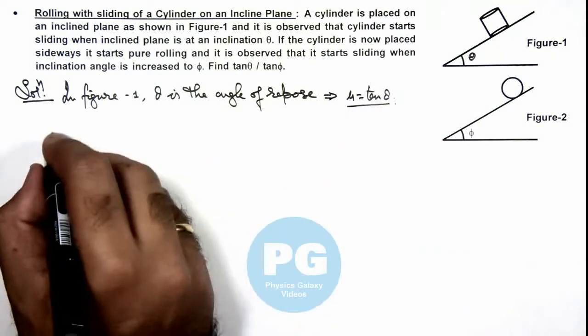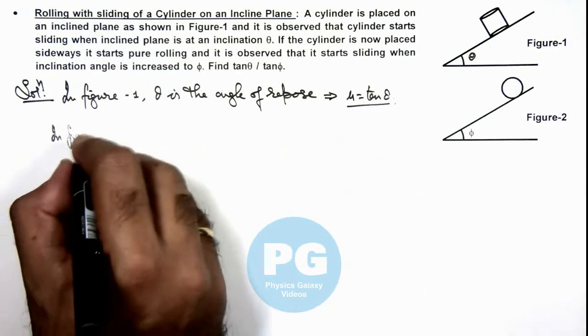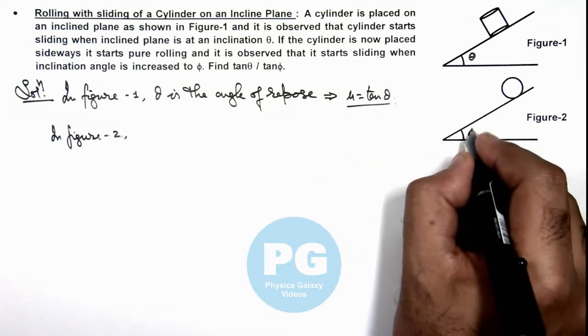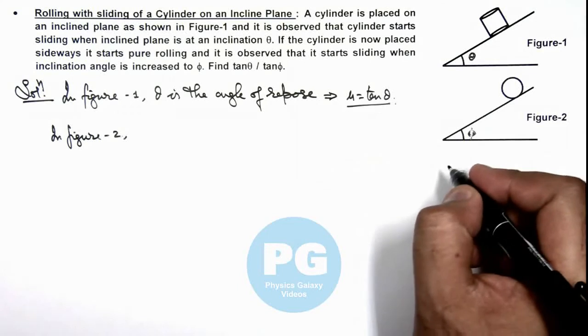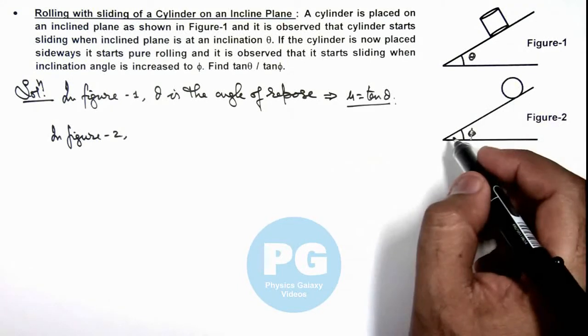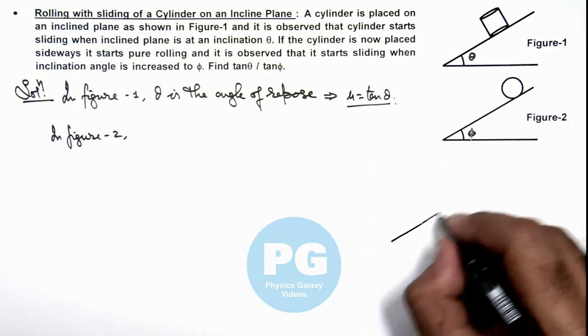And now in figure 2, we are considering phi as an angle at which the body starts sliding along with rolling. So we can write if we draw the free body diagram.